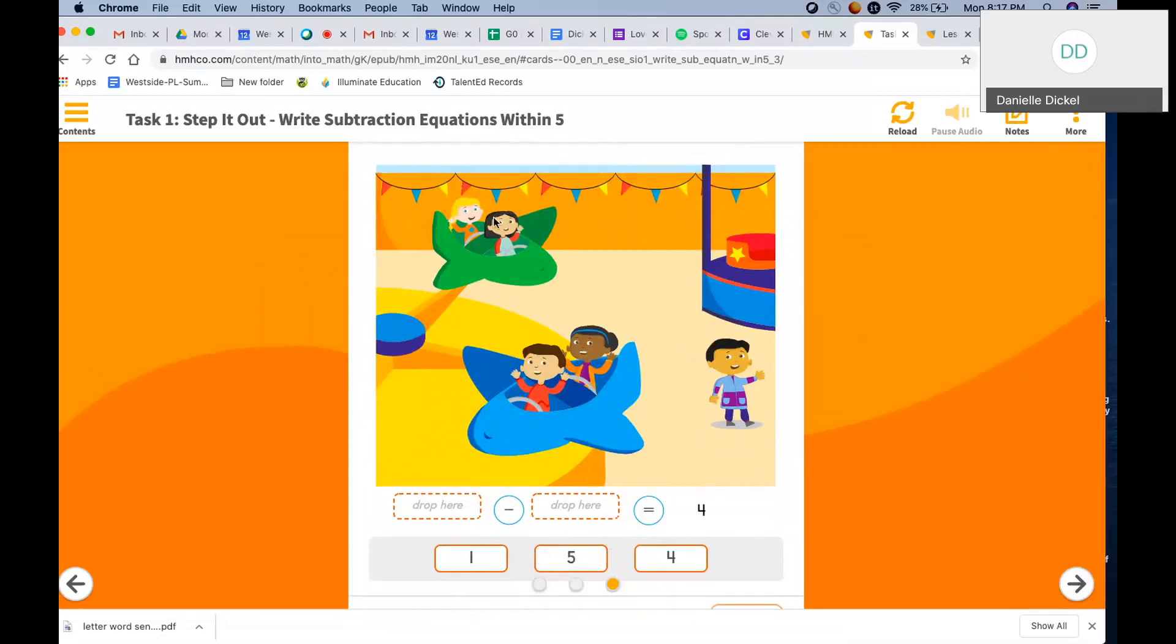One, two, three, four, five. We started with five friends on our airplane ride. How many do we notice left the airplane? Right, one left. Five minus one equals four.